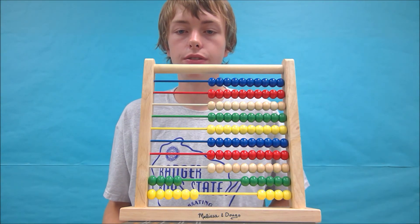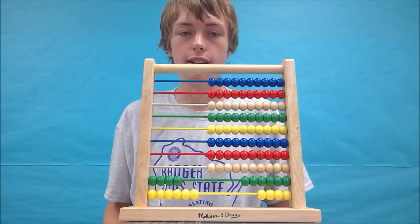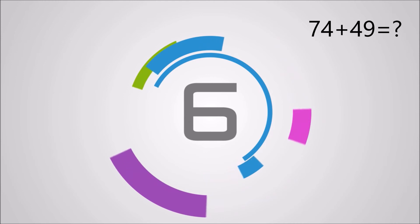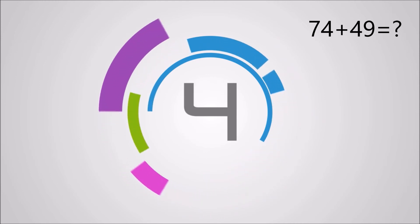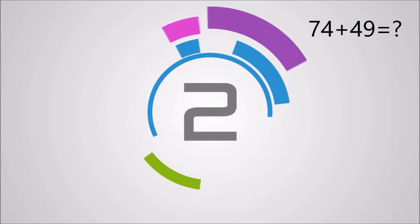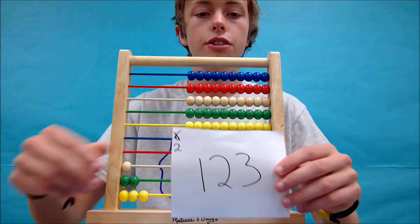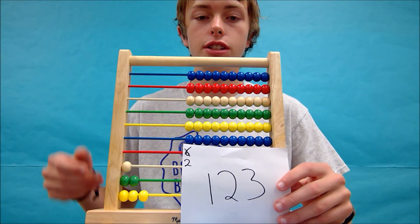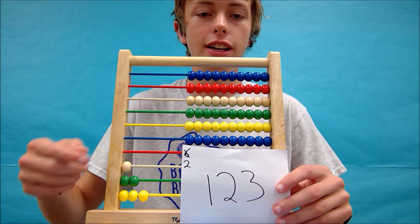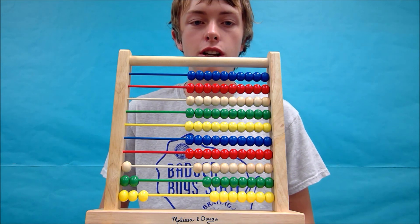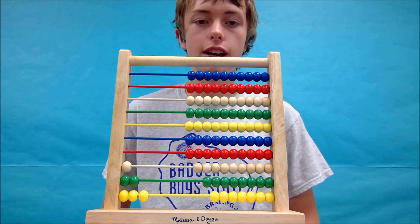Lastly, let's solve 74 plus 49. The answer you should get is 123, and your abacus should look something like this. Again, my notes are in this upper corner.